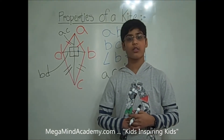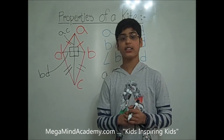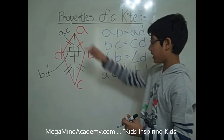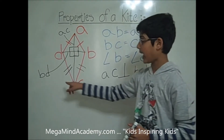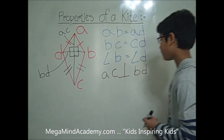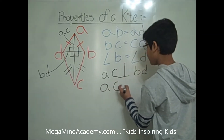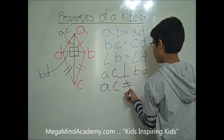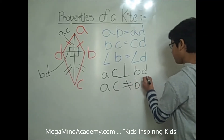One thing to keep in mind is that the diagonals are not the same length. So that means diagonal AC is not equal to diagonal BD. Let me write that out: diagonal AC is not equal to diagonal BD.